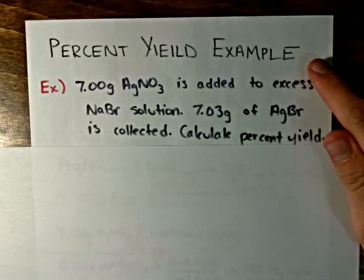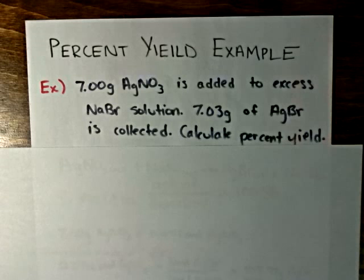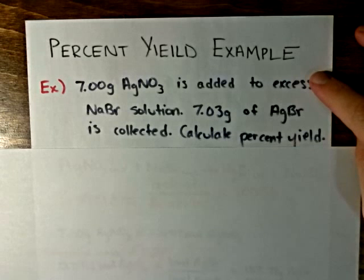7.3 grams of silver bromide precipitate is collected. Calculate the percent yield of silver bromide.